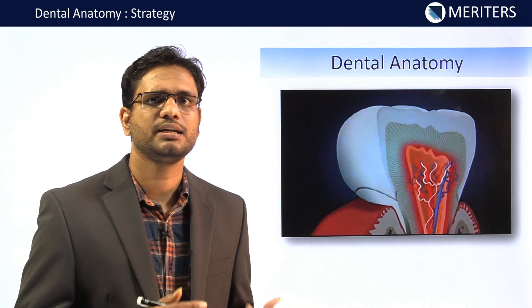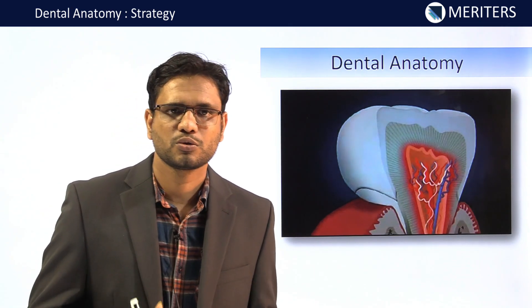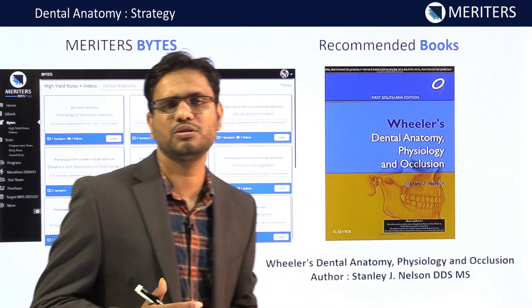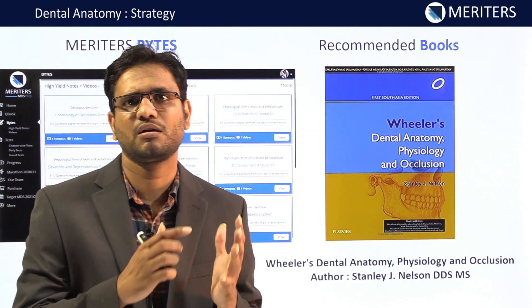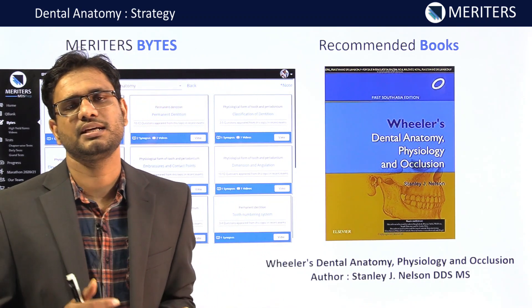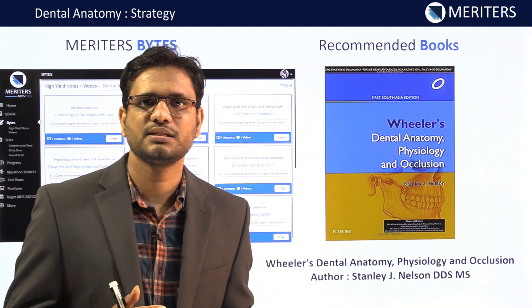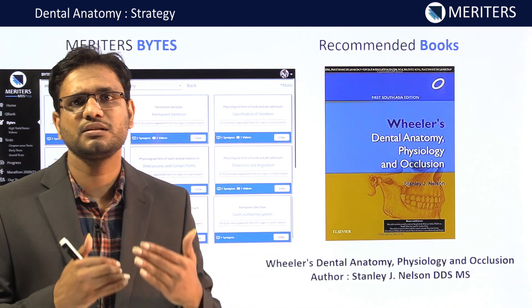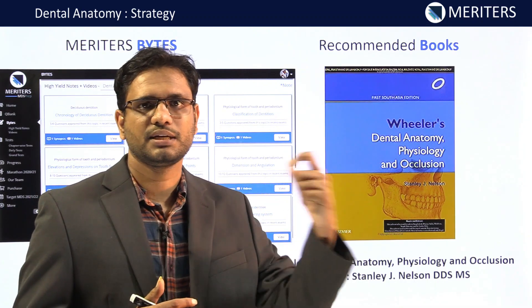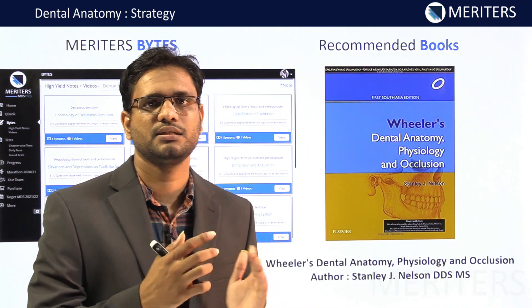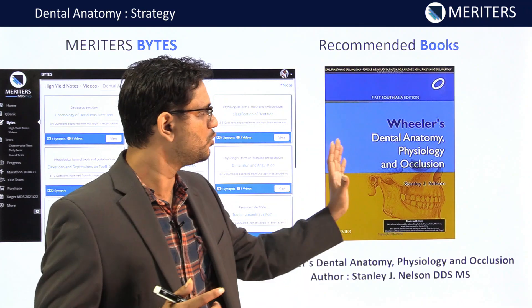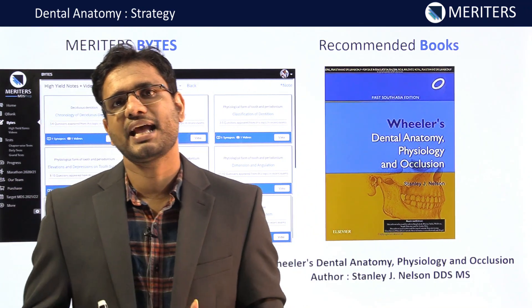Before getting into the depth of the approach, let me tell you about the sources for dental anatomy. The recommended book is Wheeler's Dental Anatomy and Physiology — it is a fantastic book, no doubt about that. However, one problem is that there are eight sets of teeth — incisors, canines, premolars, and molars — and the book covers each set separately: central incisors, then lateral incisors, and so on with all their features.